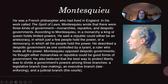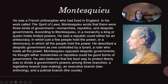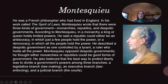Montesquieu was a French philosopher who had lived in England. In his work called The Spirit of Laws, Montesquieu wrote that there were three kinds of government: monarchies, republics, and despotic governments. In a monarchy, a king or queen holds limited powers. A republic could be an aristocracy, in which just a few people hold power, or a democracy, in which all the people hold power. A despotic government is controlled by a tyrant who holds all the power. Montesquieu believed the best way to protect liberty was to divide a government's powers among three branches: a legislative branch for lawmaking, an executive branch for law enforcement, and a judicial branch with the courts.